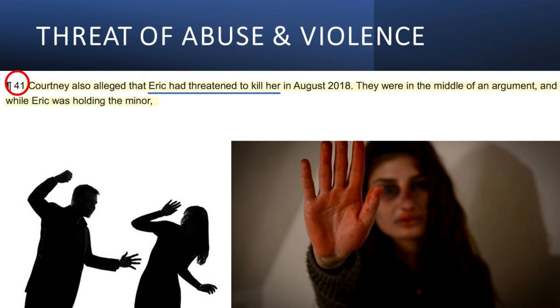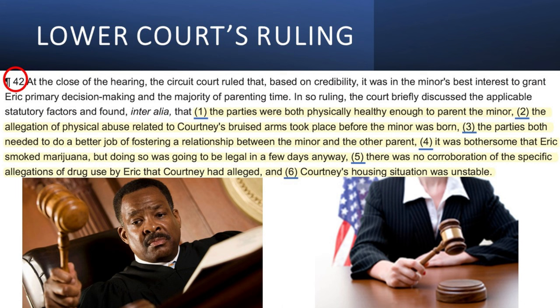Paragraph 41 says Courtney alleged that Eric had threatened to kill her in August 2018 while they were in the middle of an argument and Eric was holding the minor. Paragraph 42 tells us the lower court gave Eric primary residential and legal custody because: 1. Both parties were physically healthy enough to parent the minor. 2. The alleged physical abuse related to Courtney's bruised arms took place before the minor was born. 3. Both parties needed to do a better job of fostering a relationship between the minor and the other parent. 4. It was bothersome that Eric smoked marijuana, but doing so was going to be legal in a few days anyway. 5. There was no corroboration of the specific allegations of drug use by Eric that Courtney alleged. 6. Courtney's housing situation was unstable.